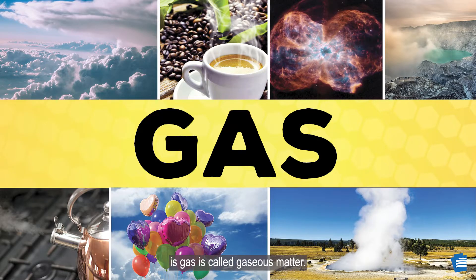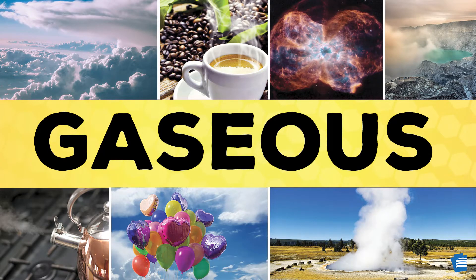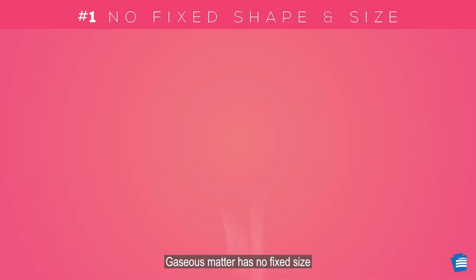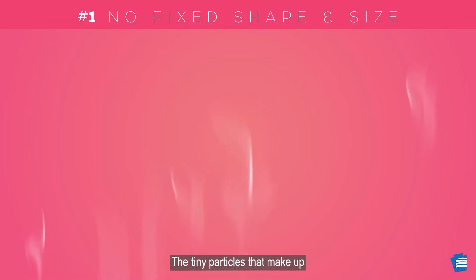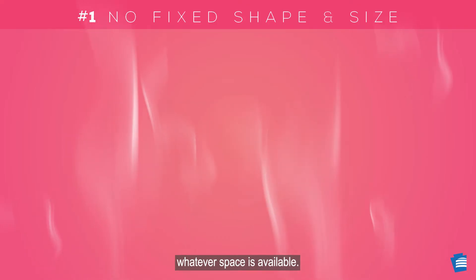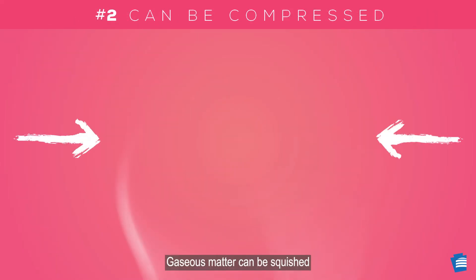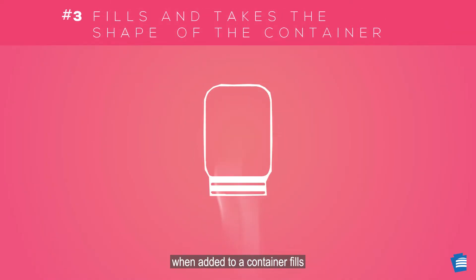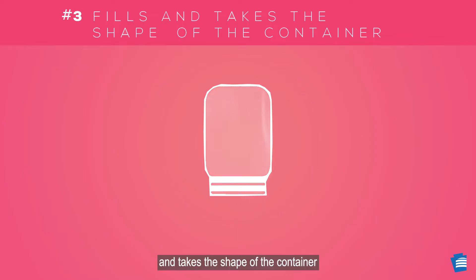Matter that is gas is called gaseous matter. All gaseous matter has three properties. Gaseous matter has no fixed size or shape. The tiny particles that make up gaseous matter are loose and spread out to fill whatever space is available. Gaseous matter can be squished or compressed. And gaseous matter, when added to a container, fills whatever the size of the container is and takes the shape of the container it is put in.